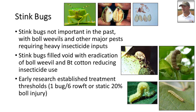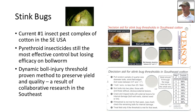In my early research, we found that treatment with insecticide was justified when stink bugs met or exceeded one stink bug per six row feet, or when 20% of bolls displayed symptoms of feeding injury from stink bugs. These thresholds were used for at least a decade across the cotton belt to successfully monitor and control stink bugs in cotton. More recently, in collaborative efforts with colleagues across the southeast, we developed the dynamic boll injury threshold we use today, which incorporates crop phenology into the injury level needed to trigger an insecticide application. Yield and lint quality are preserved when this dynamic boll injury threshold is followed, and this approach has been highly adopted and successful for managing the current number one insect pest group of cotton in the southeast.